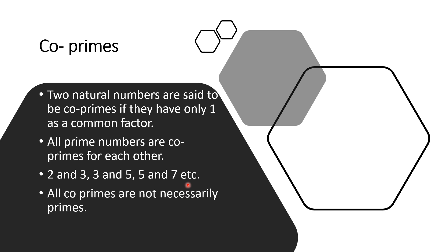But all co-primes are not necessarily prime numbers — remember this. For example, 4 and 9: 4 is not prime because it has three factors: 1, 2, and 4. Similarly 9 has factors 1, 3, and 9, so 9 is also not prime. But the common factors of 4 and 9 are: factors of 4 are 1, 2, 4 and factors of 9 are 1, 3, 9 — the only common factor is 1. So 4 and 9 are co-primes, but they are not prime numbers.